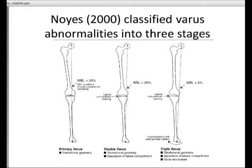It's well documented that ACL rupture disrupts the biomechanics. There are a few saving graces, in particular the posterior horn of the medial meniscus — as the femur slides backwards, it gets caught by the medial meniscus. Some biomechanical studies show that if you increase the slope, you act as an extra buffer to that medial meniscus, especially in patients with longer-standing deficiency.